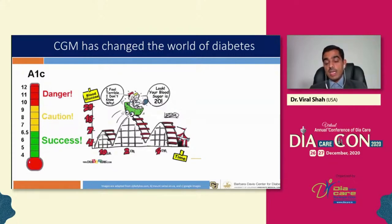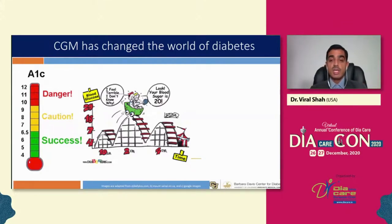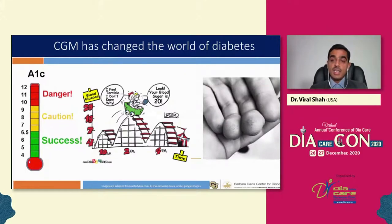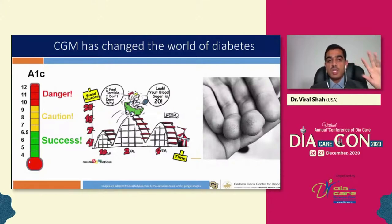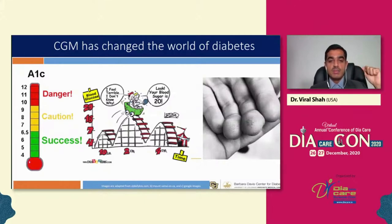CGM also makes life easier. Consider someone with type 1 diabetes for 40-50 years — poking their finger 6-7 times per day to keep A1C under 7% for decades; think of what their fingers look like. CGM has changed all of that. Dr. Shah calls CGM the fourth apple that has changed the world of diabetes.